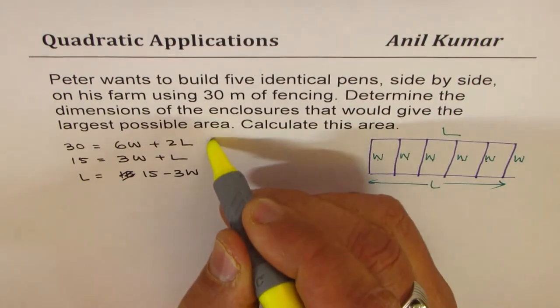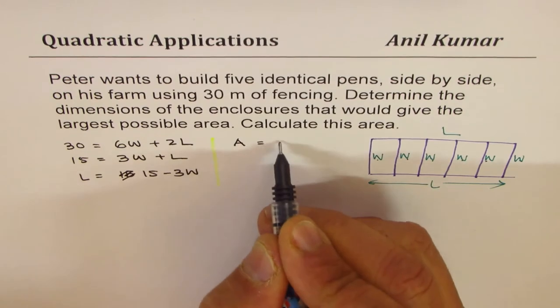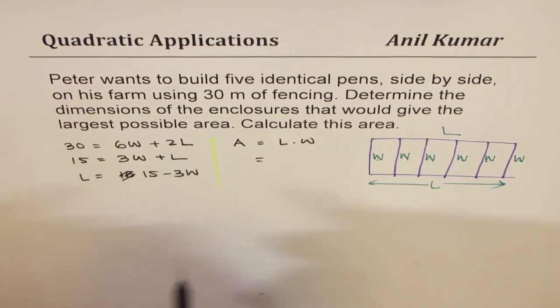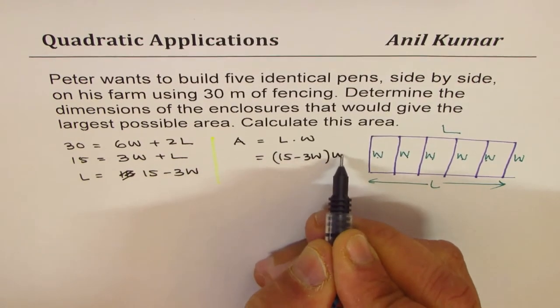Now we want to maximize area. What is area? The whole thing will be length times width. Since we know length in terms of width, we can write area as (15 minus 3W) times W.